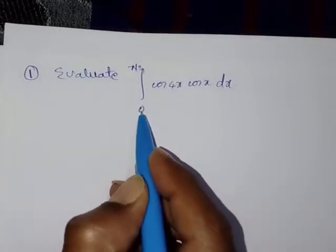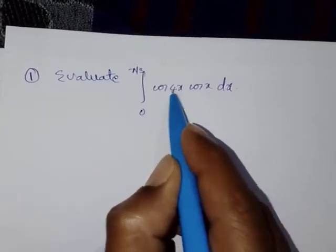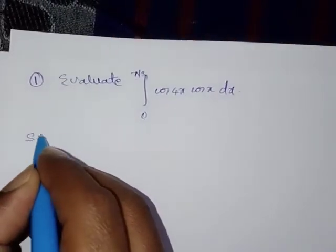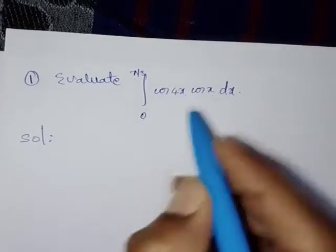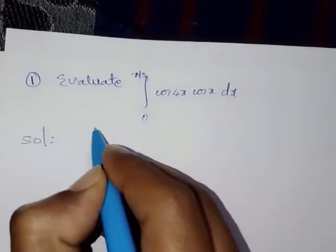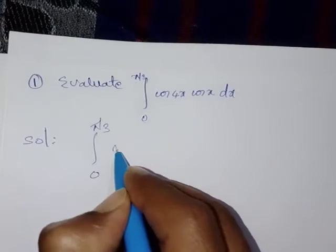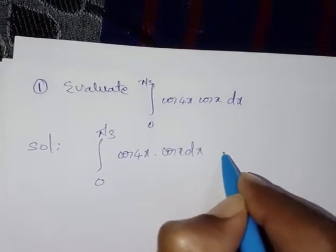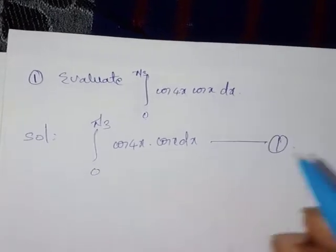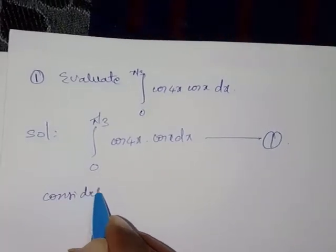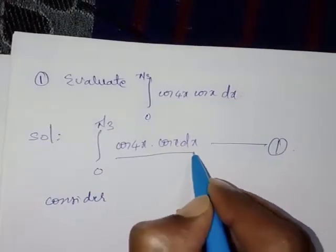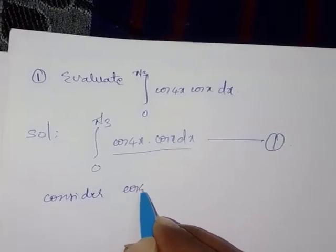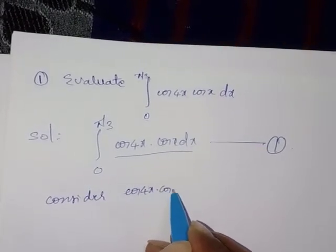Evaluate the integral from 0 to π/3 of cos(4x) · cos(x) dx. Write down the given question: integral 0 to π/3 of cos(4x) · cos(x) dx — consider this equation number 1. Now consider only the integrand, which is cos(4x) · cos(x).